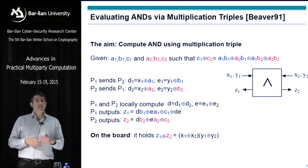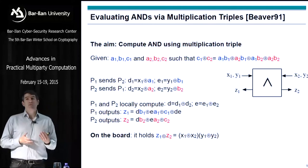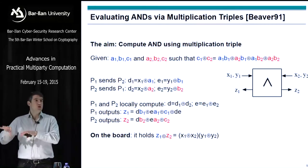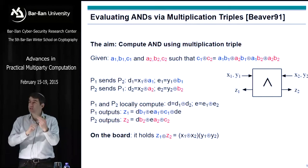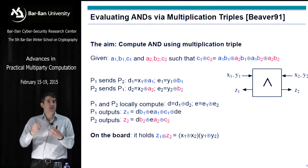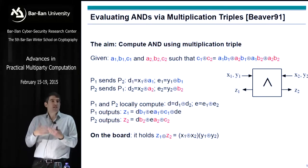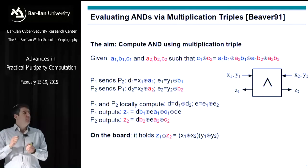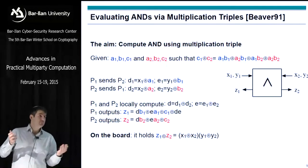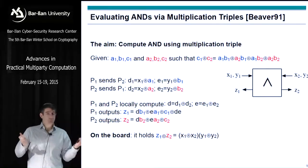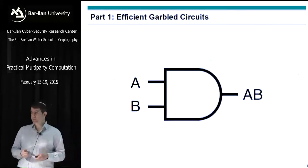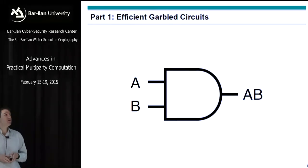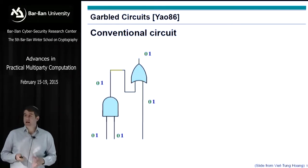Reducing bandwidth and reducing online computation time is really very meaningful. That's how we can speed up GMW really significantly. Tomorrow and on Wednesday, Claudio and Ivan will show you how to build on this to prevent cheating — essentially showing how to build multiplication triples that you cannot cheat on, very efficiently. Now let's move on to garbled circuits and Yao.